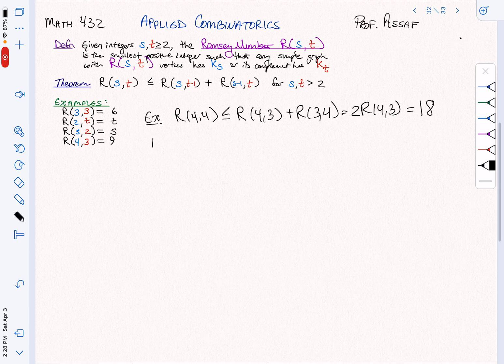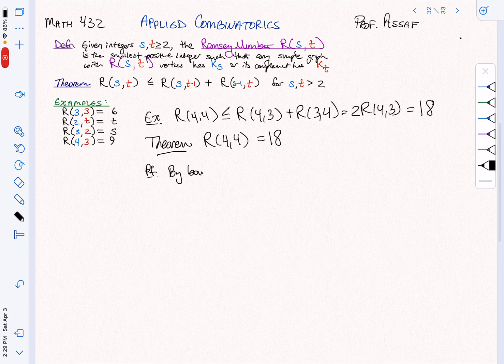And in fact, it's a theorem that this bound, in this case, is exactly right. R of 4, 4 is equal to 18. How can we prove that? Well, because we have the bound, we only have to prove one thing. By the bound, we know that R of 4, 4 is less than or equal to 18.